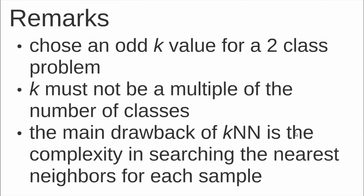Now I have some remarks about KNN. We have to choose an odd value of K if you have a two-class problem. This happens because when we have two classes and if we set K equal to 2, for example, we can have a tie.